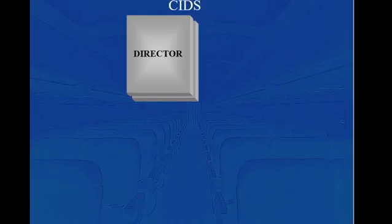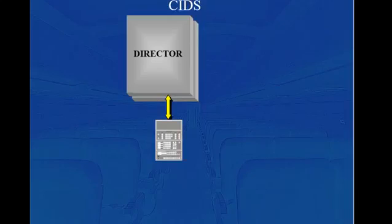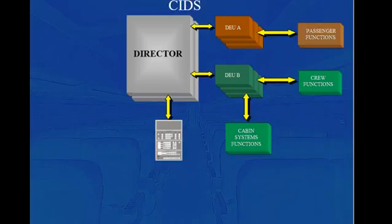The CIDS is composed of two directors, one in active mode and one in hot standby. It is linked to the Forward Attendant Panel, FAP, for control and monitoring of the cabin functions. The director communicates through decoder-encoder units, DEUs, with the cabin, passengers, and crew systems.